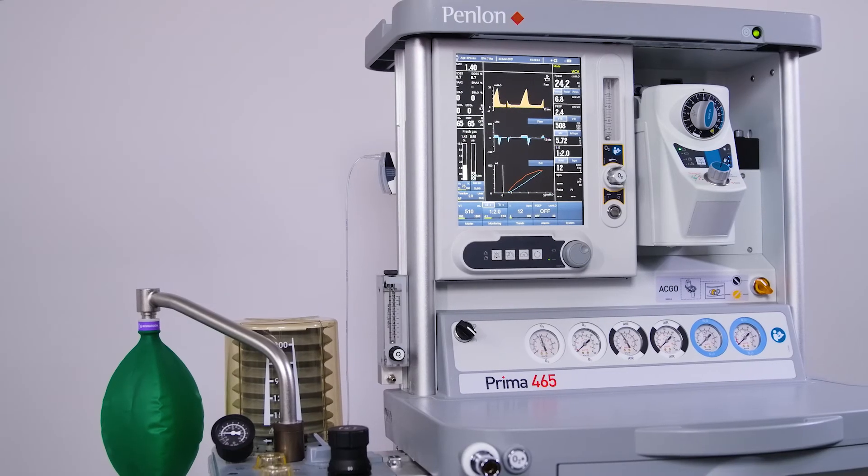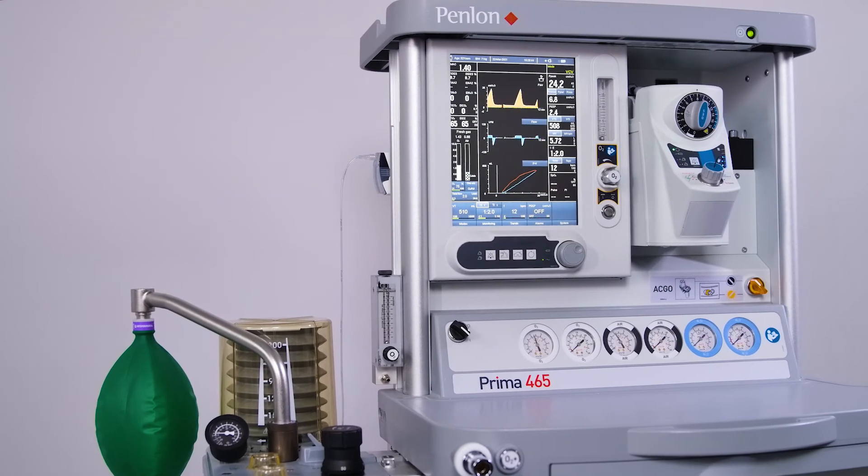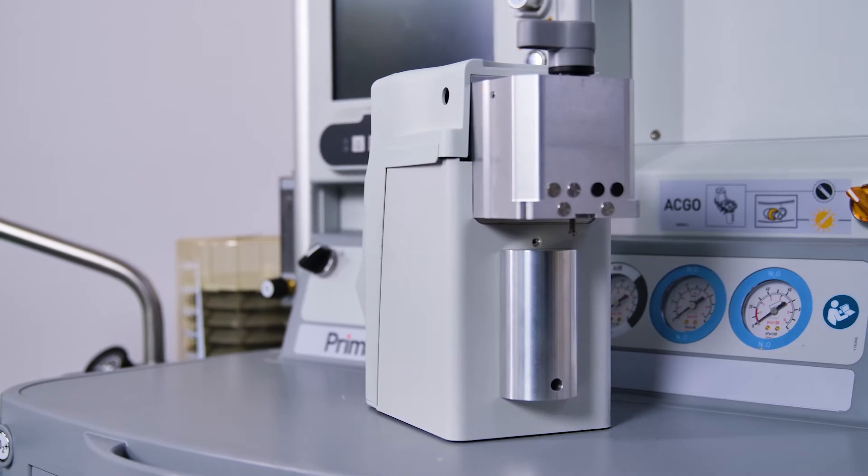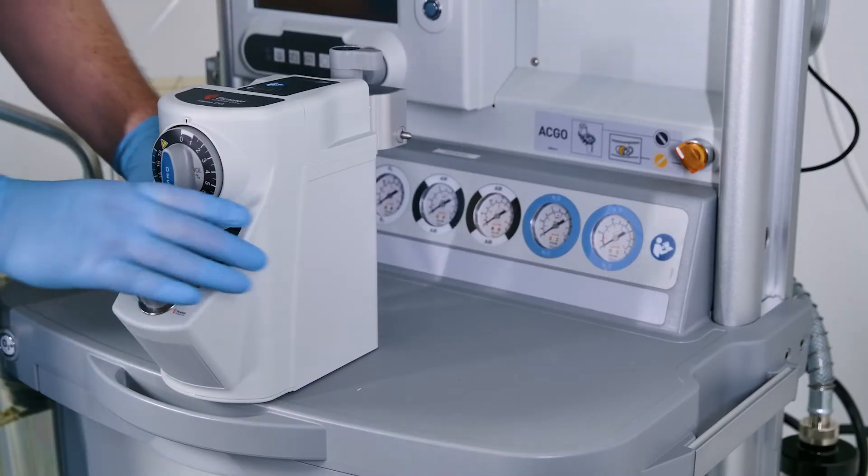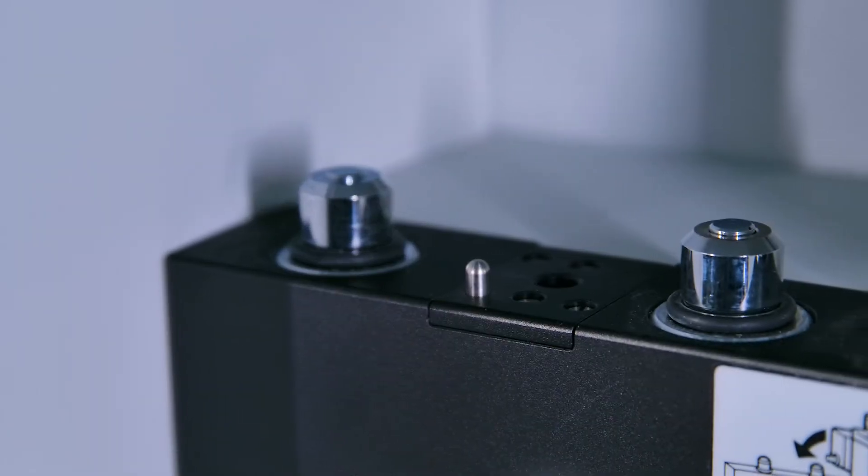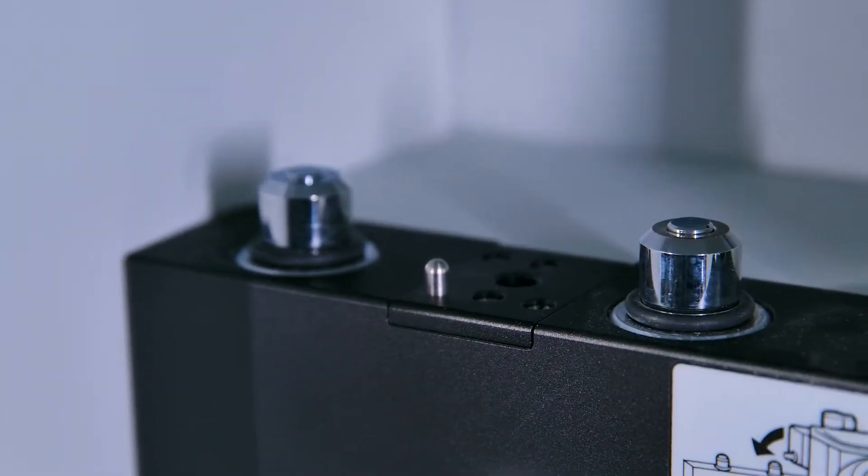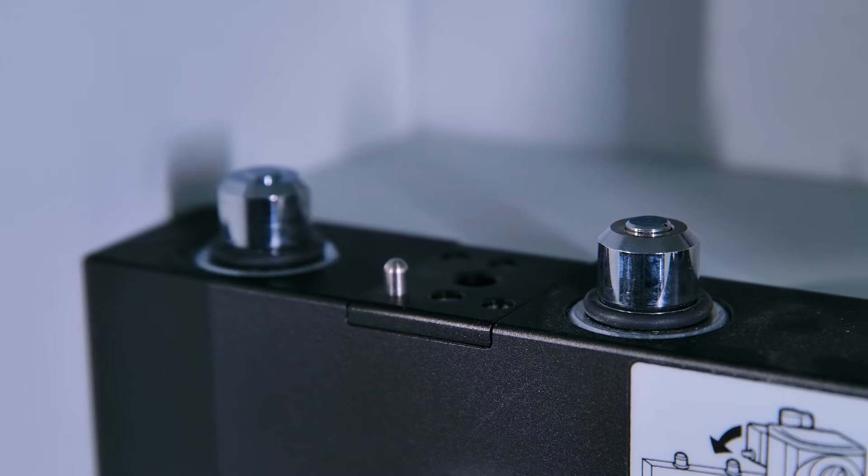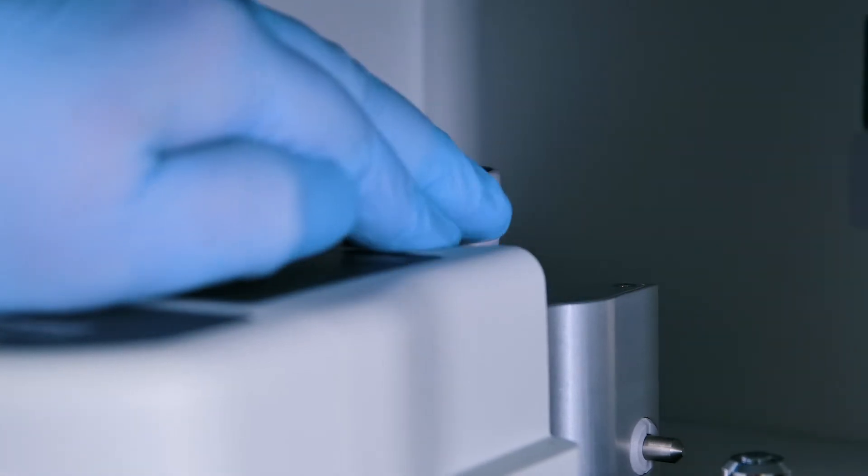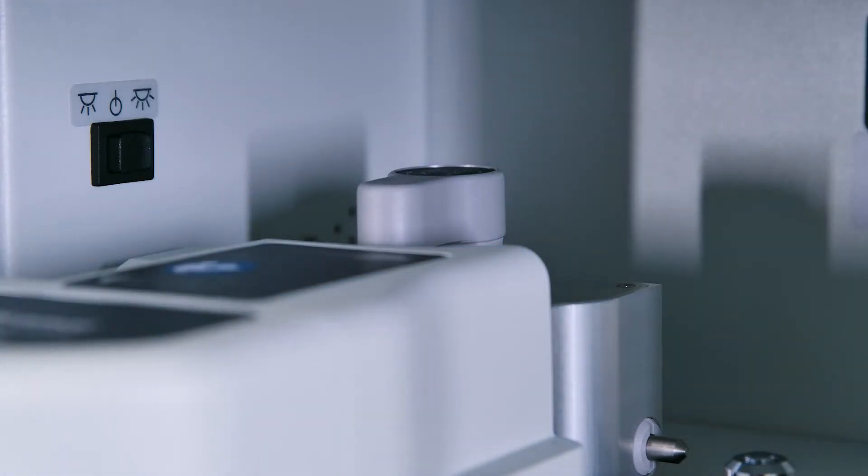Installing the Sigma EVA vaporizer on anesthetic machines with Selectatec or Draeger Auto Exclusion back bar manifolds: Offer the vaporizer up to the manifold. Align the gas connection ports on the underside of the connector block with the valve capsules on the manifold. Lower the vaporizer onto the manifold. Lock into position by pushing the locking lever downwards and rotating clockwise through 90 degrees.